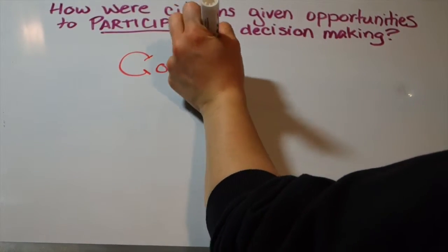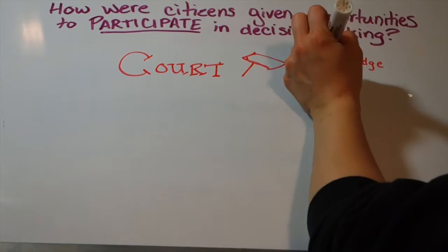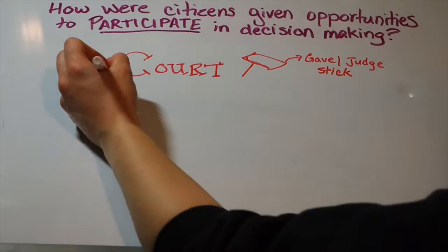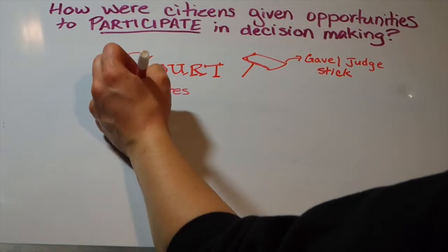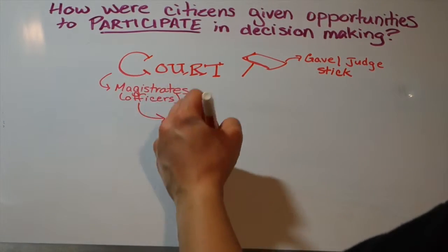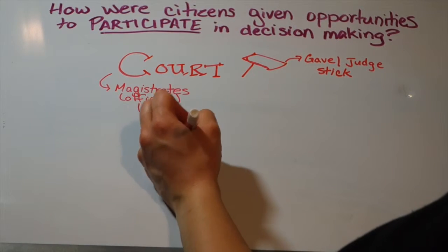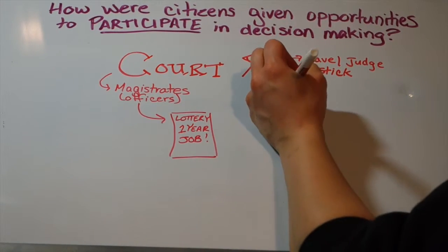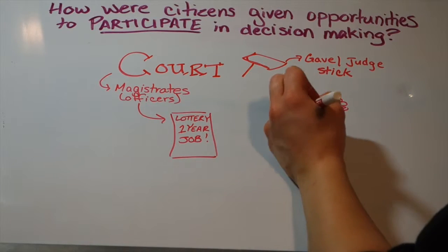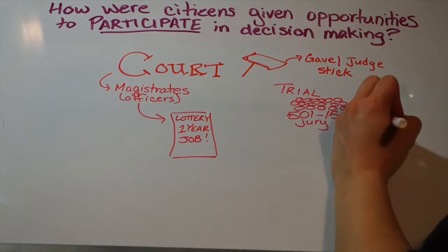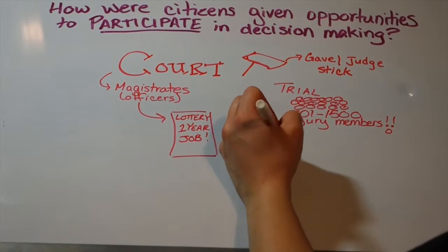Finally, we come to the courts — and my attempted drawing of a gavel, the stick that a judge holds. It looks more like Thor's hammer. In the courts you have the magistrates, or officers — the people who carry out the jobs of the court. Just like the Council of 500, they also get their job through a lottery system for a one-year term. The magistrates could either make decisions on their own or send any sort of problem into a trial. In ancient Greece, a trial could have between 501 and 1,500 jury members.